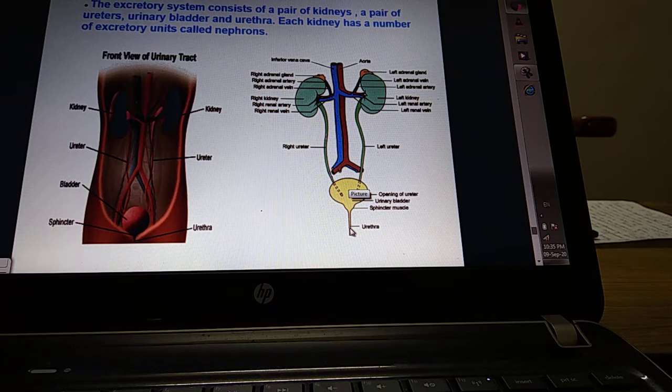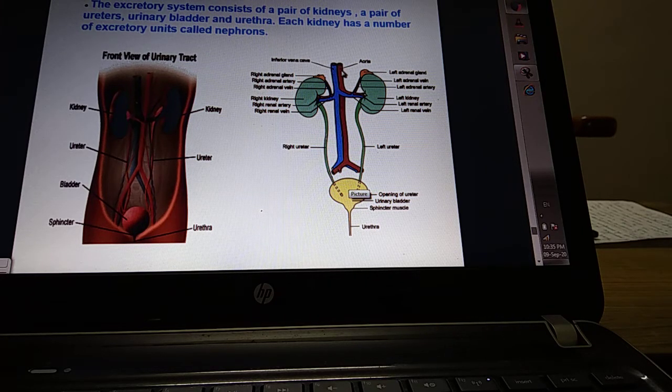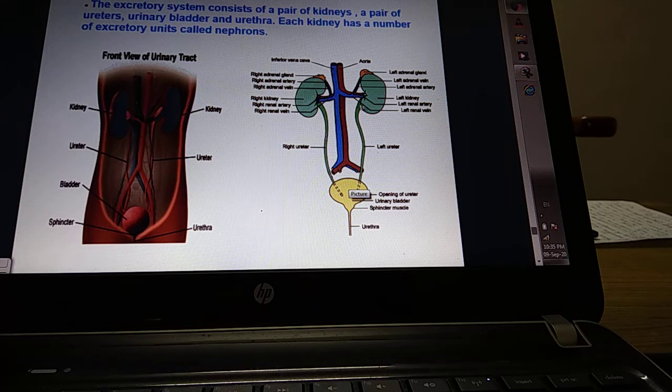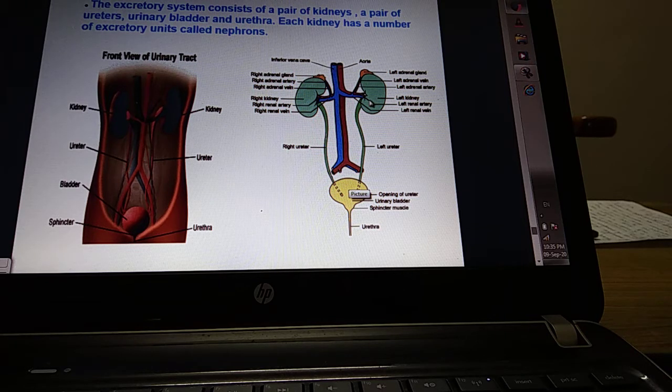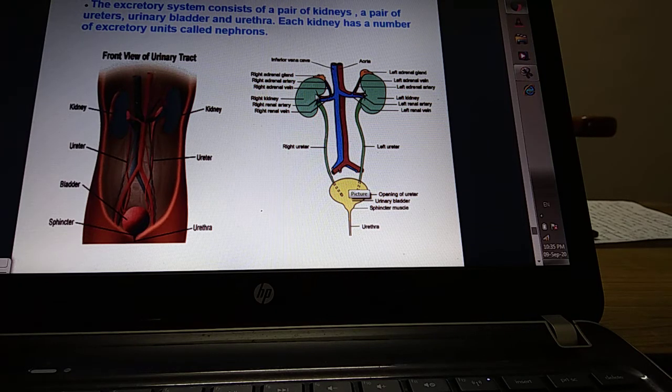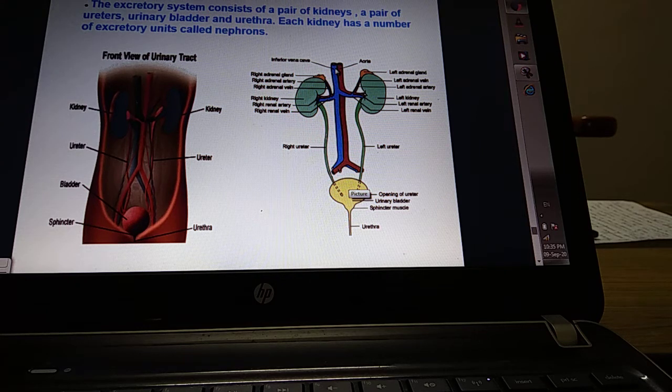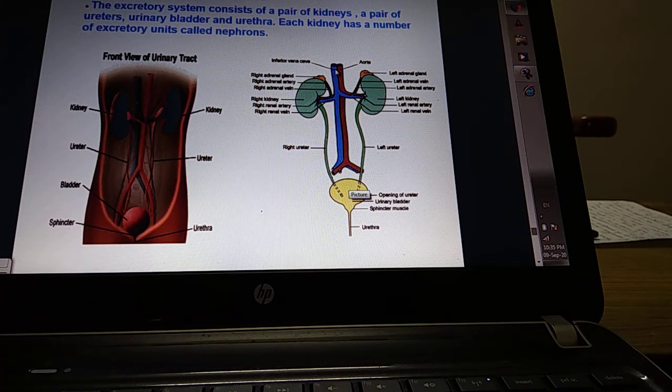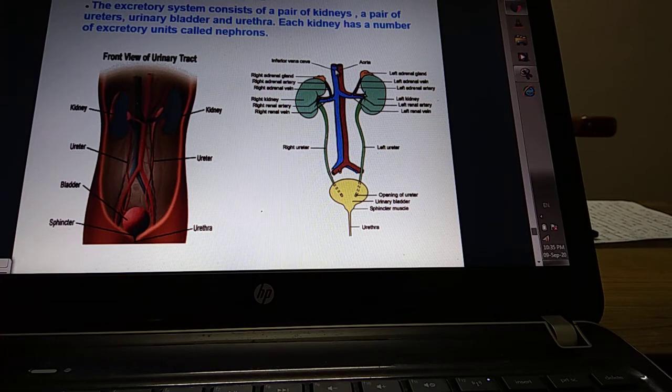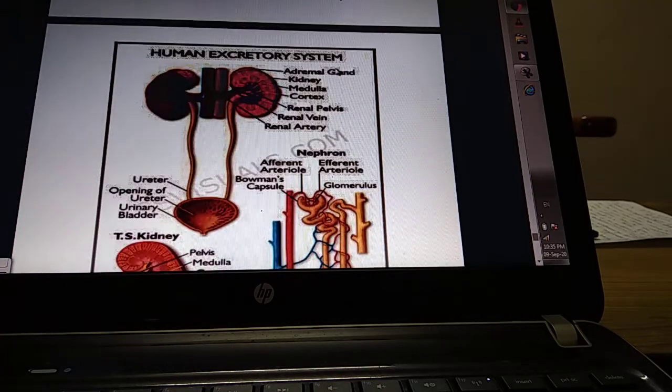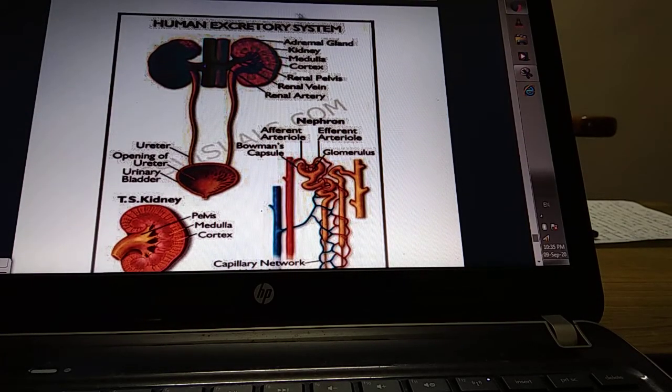And this is again the detailed structure - kidneys, ureters opening into the urinary bladder which opens to the exterior by the urethra. One branch of the aorta, the renal artery, enters into each kidney. Similarly, blood is collected by the veins and these veins join the major vein of the body, the inferior vena cava. So this is the excretory system of humans.